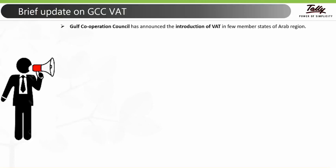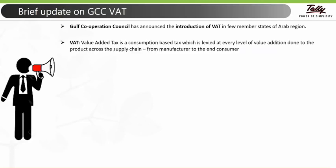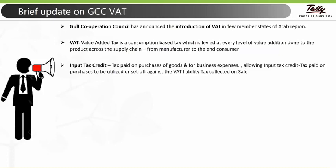We'll talk about a brief update on GCC VAT. The Gulf Cooperation Council has announced the introduction of VAT in member states of the Arab region. VAT, which stands for Value Added Tax, is the tax levied at every level of value addition done to the product across the supply chain. It is levied at every point of sale from manufacturer until it is sold to an end consumer. VAT is an indirect tax in which the incidence and burden of tax is on different persons. It is typically levied on various economic activities like manufacturing, sales, and services. Under VAT, the tax burden is shifted to the end consumer — the business entity acts as an appointed agent of government who collects tax from the end consumer and deposits it to the government. This is achieved by allowing tax paid on purchase, known as input tax credit or input VAT, to be adjusted with the VAT collected on sales, known as output VAT.